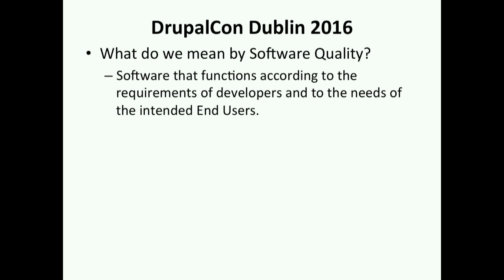We'll be going through this with the whole idea of continuous testing as part of continuous integration. To answer the question: what do we mean by software quality? Software that functions according to the requirements of developers and to the needs of the intended users. This definition sounds like an easy path to satisfy both creators and customers, but as we know, things go very wrong very often.